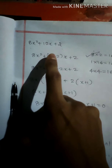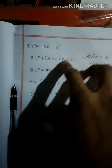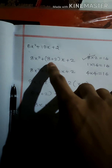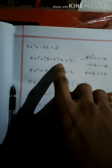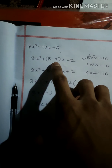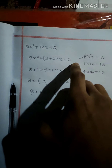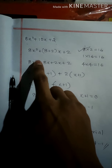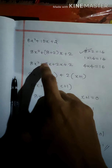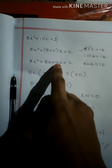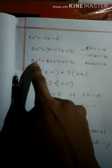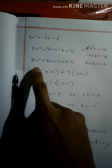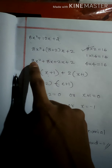So we split the middle term and rewrite: 8x² plus 8x plus 2x plus 2. Next, take common factors from each group: 8x from the first pair and 2 from the second pair.